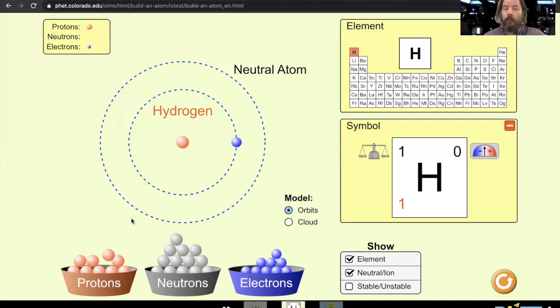Now if I add another proton, we now have helium, but helium actually in nature comes with two neutrons and two electrons. So that's what a helium atom would look like.